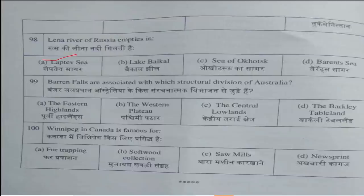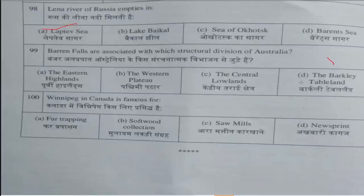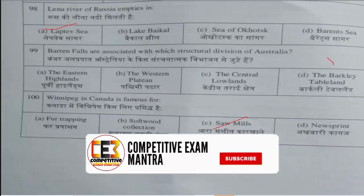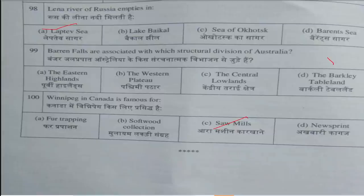Question number 97: The 49th parallel is associated with — answer is option B, Canada and the US. Question number 98: The Lena River of Russia empties into — answer is option A, Laptev Sea. Question number 99: Burrard Inlet in Canada is famous for — answer is option C. With this, all the questions are complete. You can comment in the comment box and we will check it and update it.